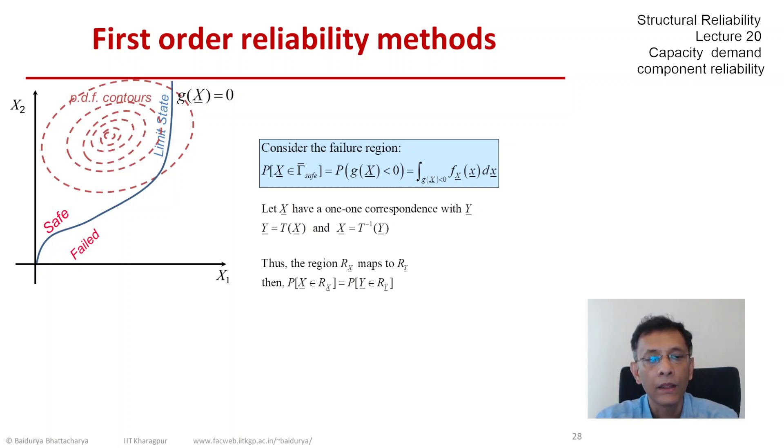In that case, any region R_X would map to a corresponding region R_Y from X to Y. And the probability content of the region R_X would equal, we have discussed this when we discussed joint distributions, would equal the probability content of the region R_Y. That is a key element there.